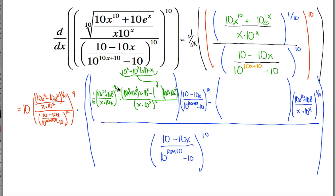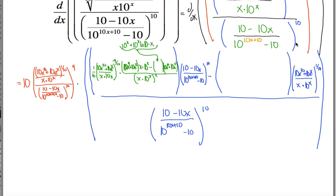This inner quotient rule gives the derivative of what's inside the parentheses, and combined with the outer chain rule layer, gives the derivative of the entire top part — which is the f prime in the larger quotient rule. Now I need to figure out g prime in the larger quotient rule: the derivative of this stuff in the denominator. It's something raised up to the 10th power. If it were just x to the 10th it would be 10x to the 9th. But it's 10 minus 10x divided by 10 to the 10x plus 10 minus 10, raised to the 10th power. So I use the power rule and then chain rule — I bring the 10 down, subtract 1 from the exponent, and multiply by the derivative of the inside.